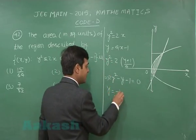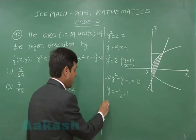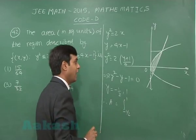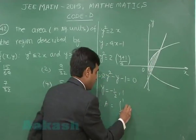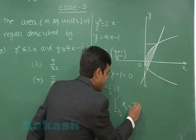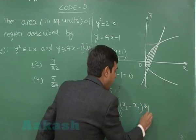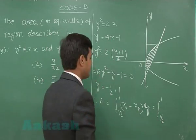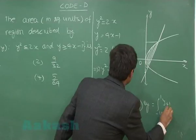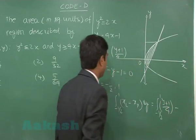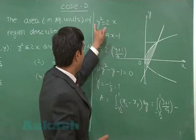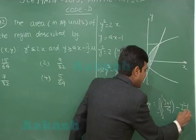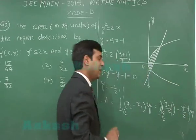Therefore the required area is from -1/2 to 1: x_line - x_parabola dy. So it is from -1/2 to 1: [(y + 1)/4 - y²/2] dy.